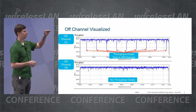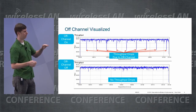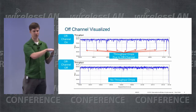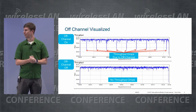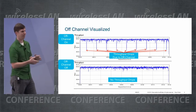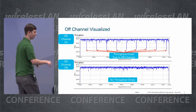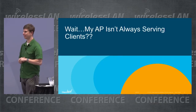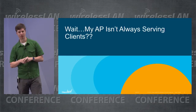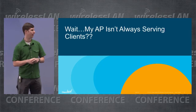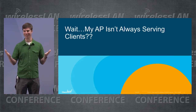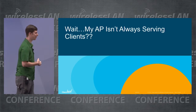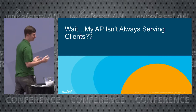That's the top graph here. The bottom graph is with off-channel turned off, and there are no more dips. So why does the AP do that? I'm telling you that your AP is not always serving clients — it's doing other things, and hopefully it's for the greater good. Sometimes it may not be, but usually it is.